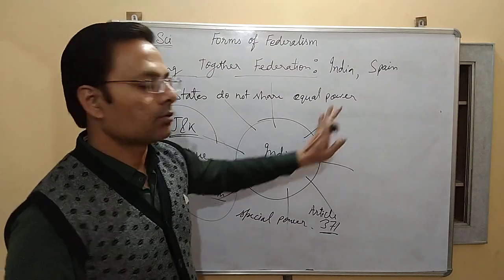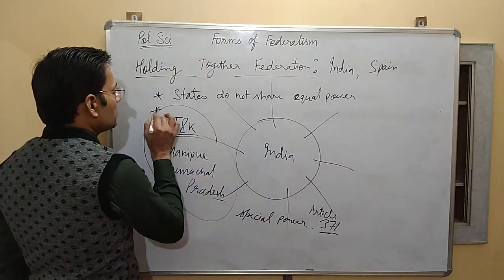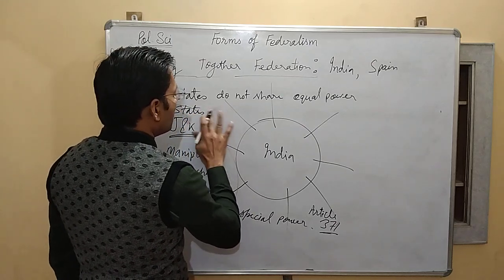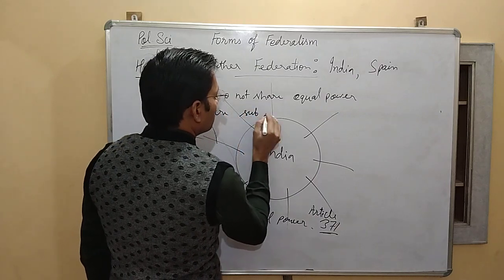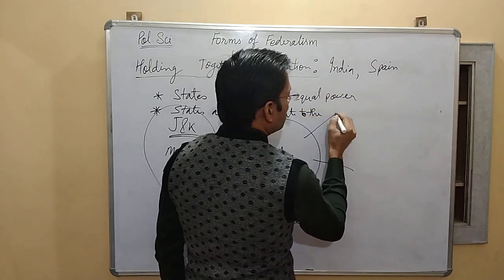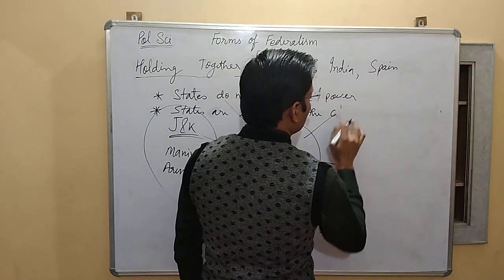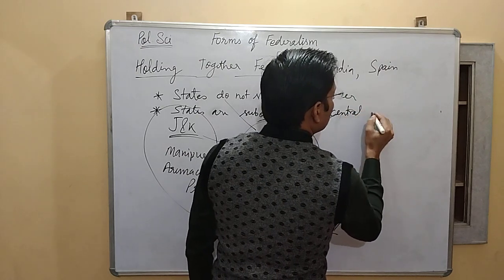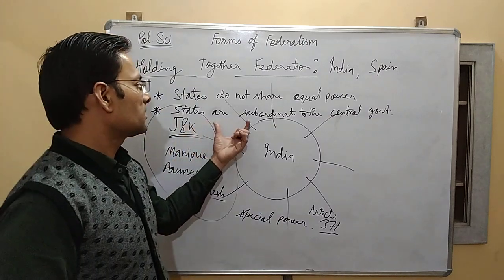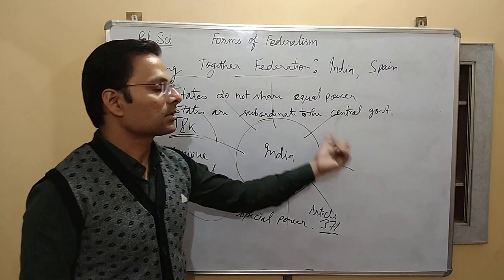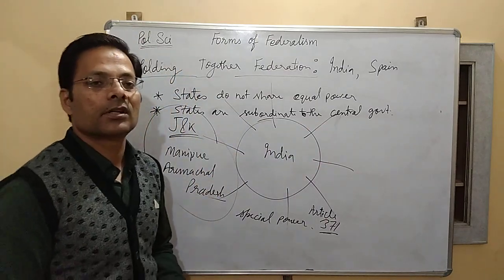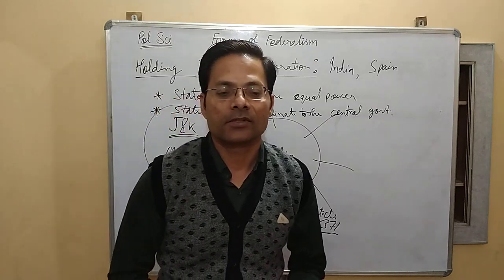So states do not share equal power in holding together federation. The next key point is that states are subordinate to the central government — unlike in coming together federation where states are not subordinate. This subordination of states to the central government is the main difference between holding together federation and coming together federation. That is enough for today. Thank you so much.